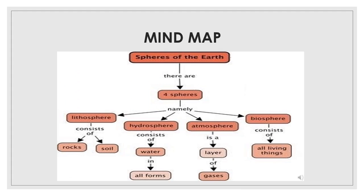I also want you all to do the mind map of the different spheres of earth. You can see on the screen and copy it into your notebook. The heading is spheres of earth: lithosphere, which is made up of rocks and soil; hydrosphere, which consists of water in all forms — sea water and fresh water from sources like lakes, rivers, etc.; atmosphere, which is a layer of gases; and biosphere, which consists of all living things. Please note that I will be sending you the PDF of the mind map and Venn diagram in our group.